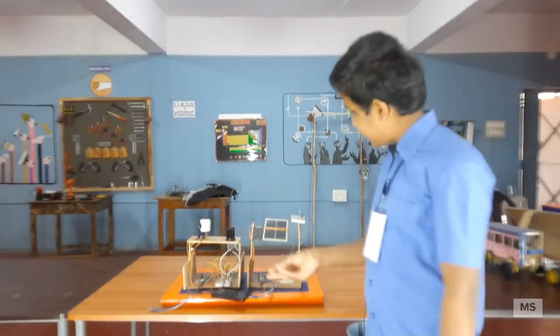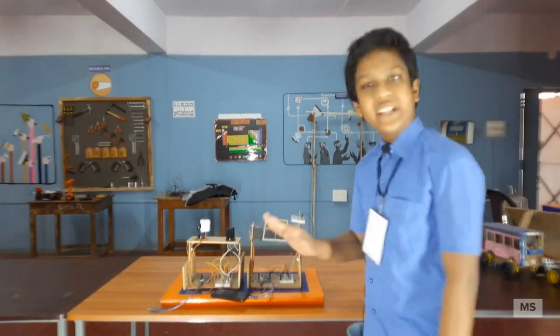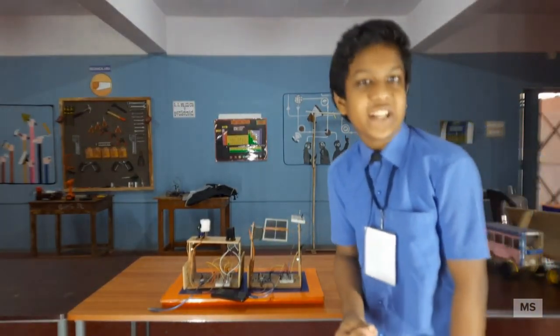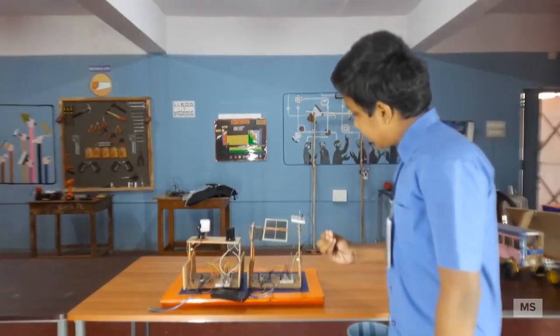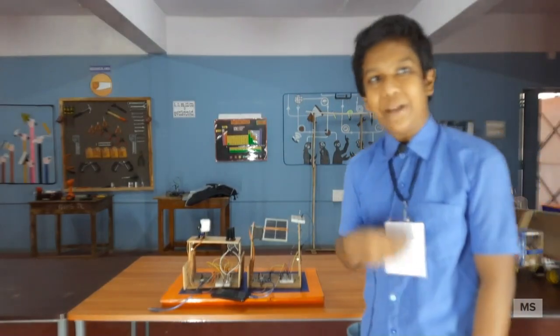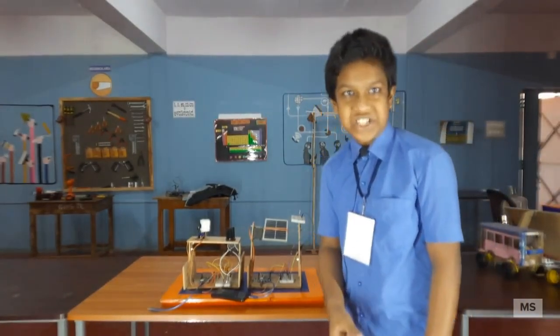When sunlight gets slant, it achieves very less amount or very poor amount of electricity. So, solar tracker keeps up with the sun to get maximum amount of energy possible.